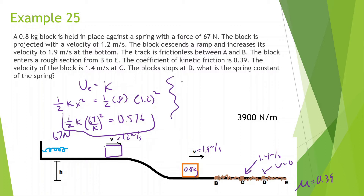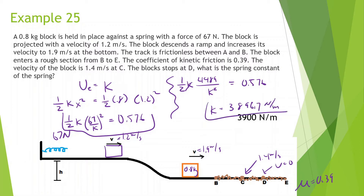We have ½ × 67² ÷ K = 0.576. Since 67² = 4489, one K cancels out, giving 0.5 × 4489 / K = 0.576. Bringing K to the other side and dividing by 0.576, we get K ≈ 3,896.7 N/m. Moving on.